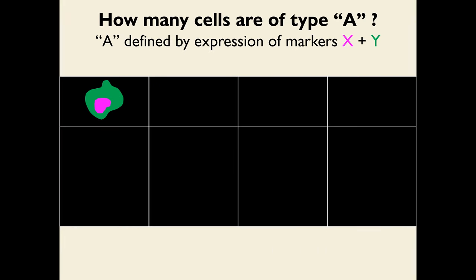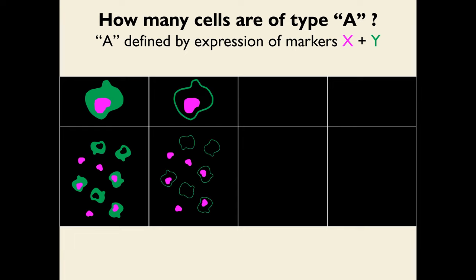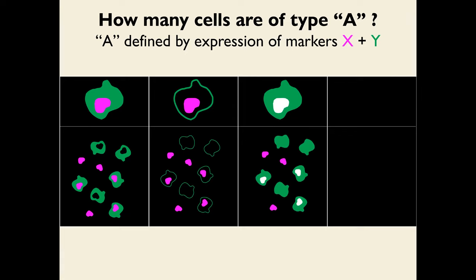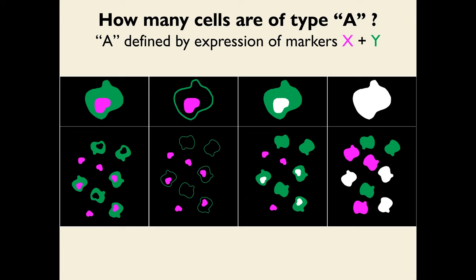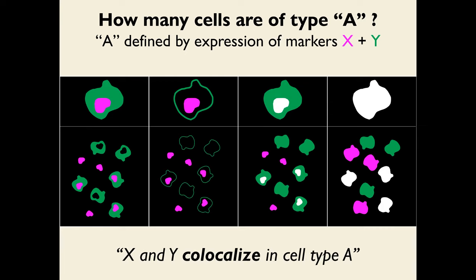Another common usage is when asking how many cells are of a certain type A, defined by the expression of two markers X and Y. If X is a nuclear marker and Y is a cytoplasmic marker, you may have cells with one, the other, or both, and you're interested in the ones that have both. Note that in this case, the two markers do not overlap inside the same parts of the cell, but they are both in the same cell — this is referred to as co-localization in cell type A.